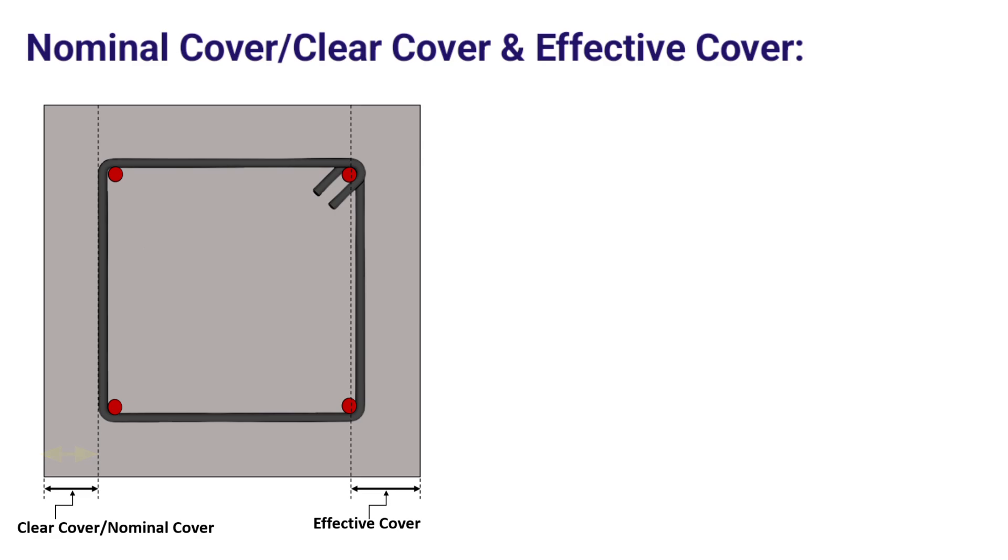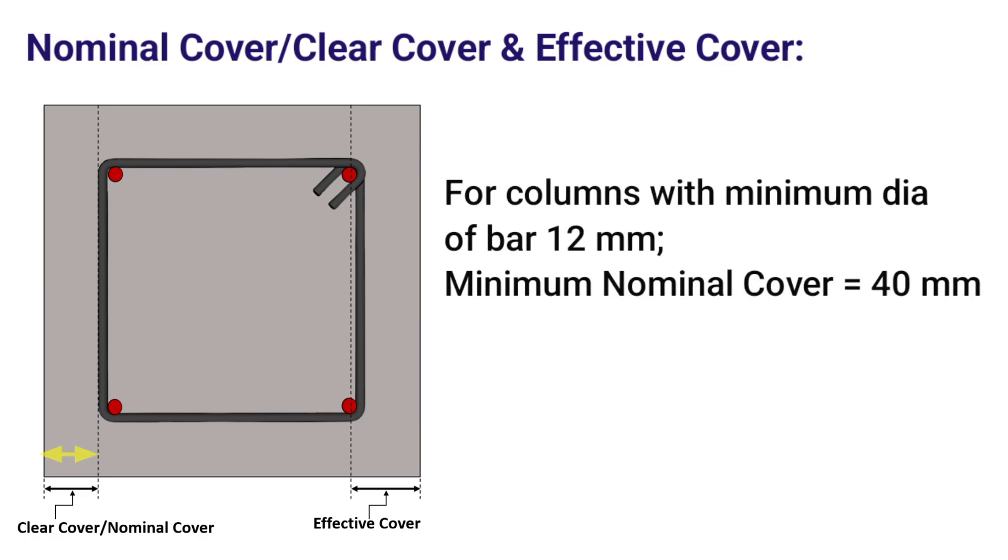However, as per IS456-2000, the term clear cover is replaced by the term nominal cover. For columns provided with a minimum diameter of 12 mm bars, the minimum nominal cover provided is 40 mm. The term effective cover is usually used in design calculations. Effective cover means the distance between the exposed concrete surface to the centroid of the main reinforcement.